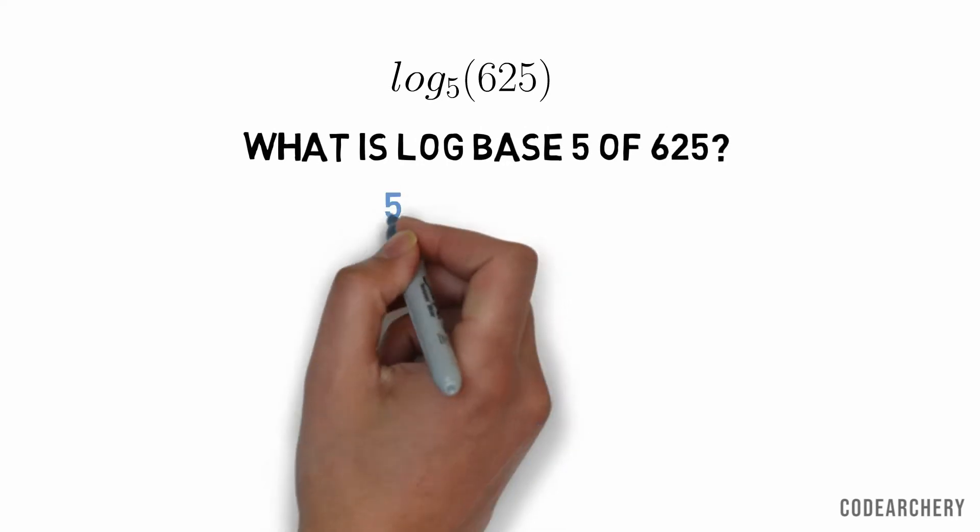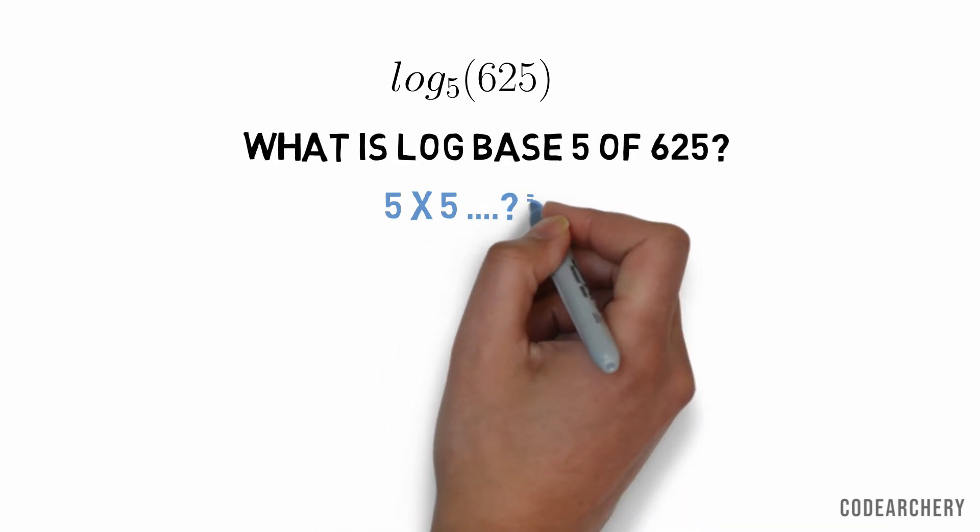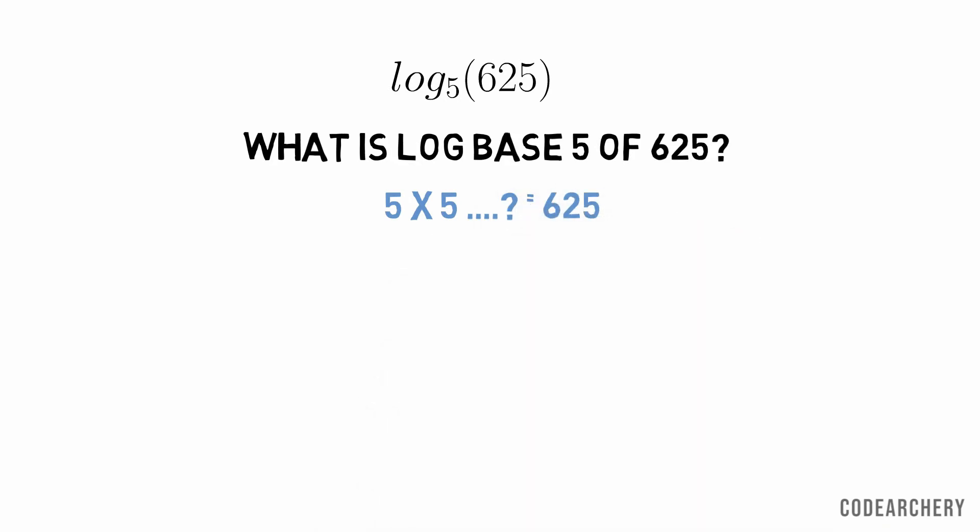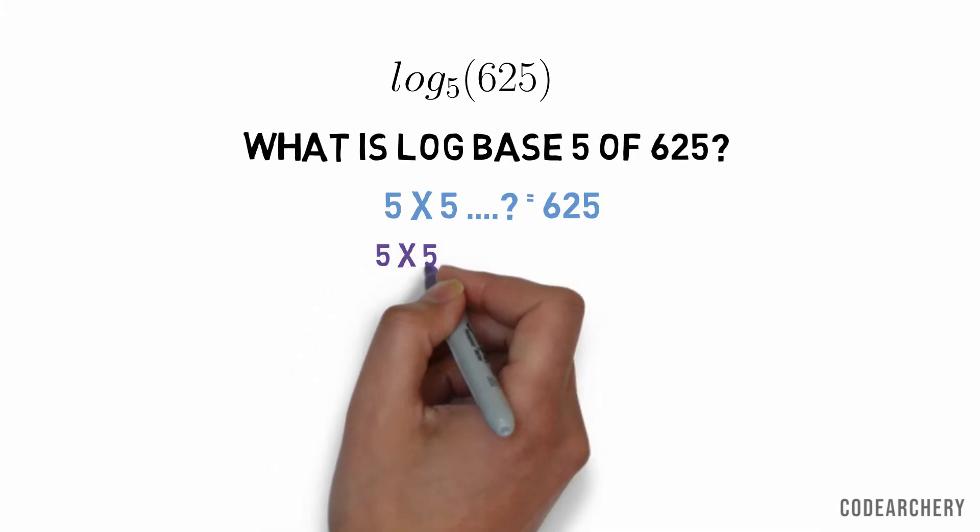Let's take one more example. What is log base 5 of 625? Now, we know that in simple words, it means how many times do I need to multiply 5 to get 625 as an answer? So the answer is 4.